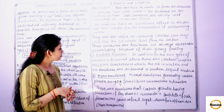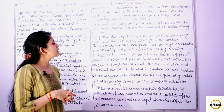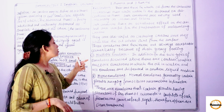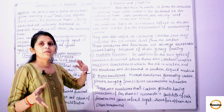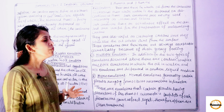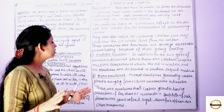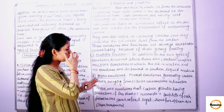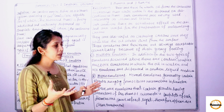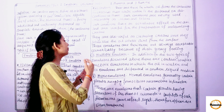Third is multiple emulsions. In addition to the two types of emulsions discussed above, there are certain complex multiple emulsions in which oil-in-water and water-in-oil emulsions are dispersed in another liquid medium. When we disperse those two types of emulsions into another liquid medium, that is known as multiple emulsions.